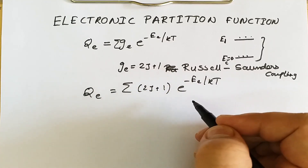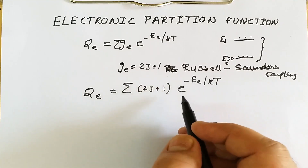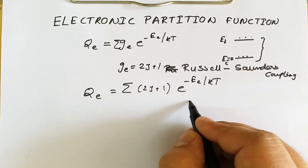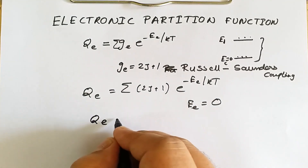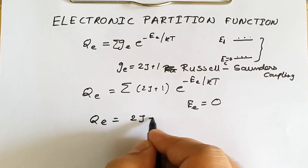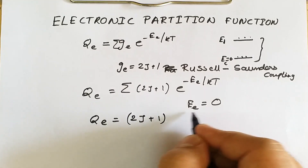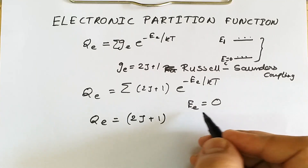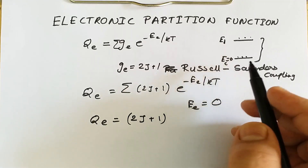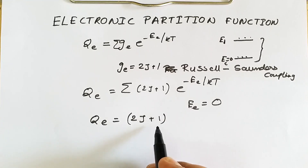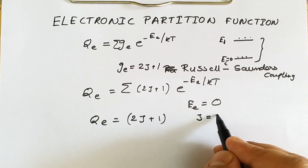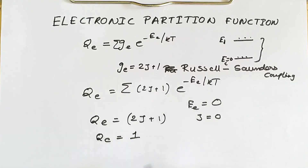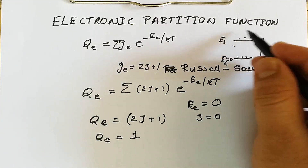If all molecules or atoms are in the ground state, then the energy ee equals zero, no higher energy levels are populated, and the electronic partition function equals simply 2J+1 — depending only on the degeneracy of the state. If the angular momentum quantum number J is also equal to zero, then the electronic partition function equals unity. As temperature increases, the value of the electronic partition function also increases because the population of particles in higher energy levels increases.